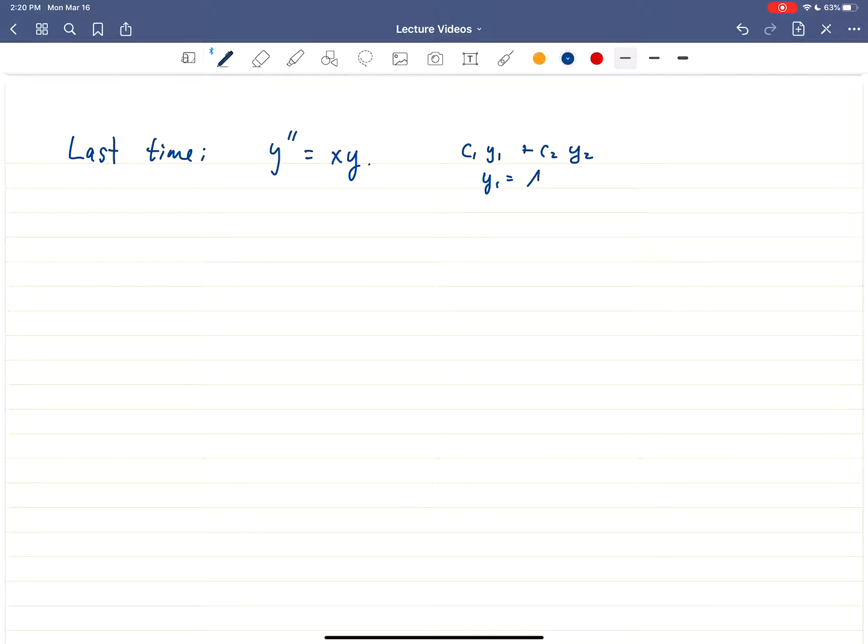These are called, by the way, these have names I just thought I'd mention. y₁ is called Aries function, so it's called the Aries function, or the Aries function sometimes. And then y₂, which is denoted Bi, is called the Bi-Aries function, kind of the auxiliary Aries function. So those had names.